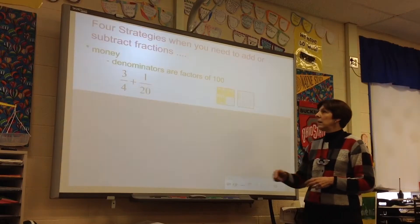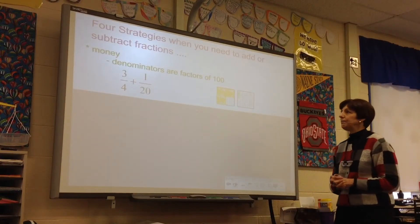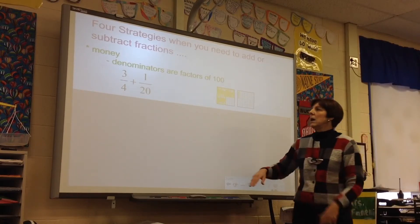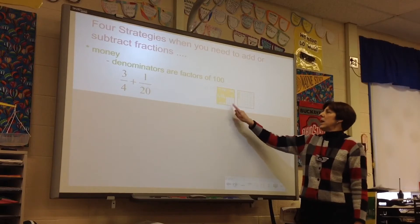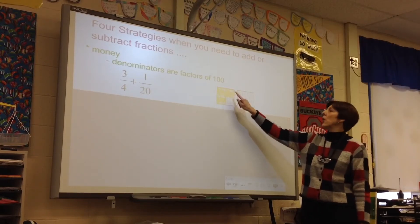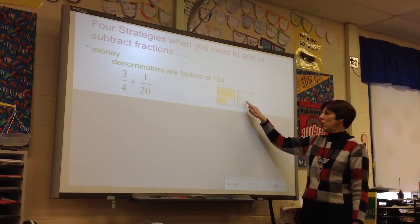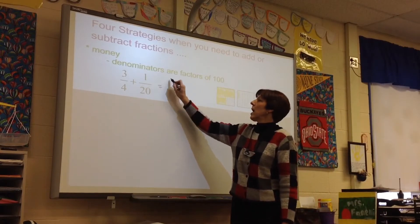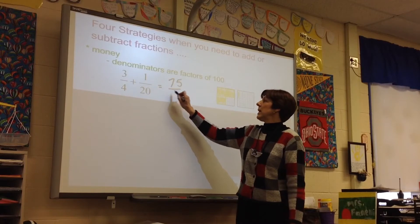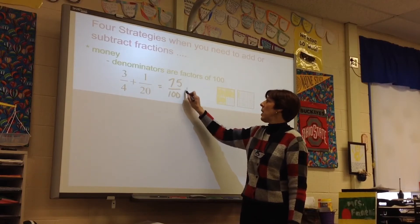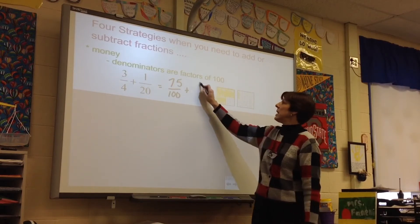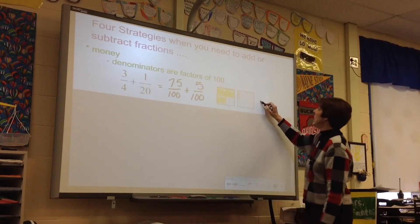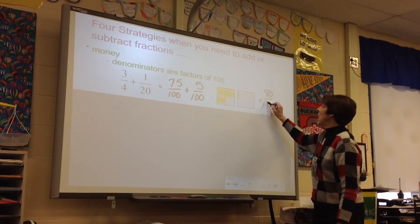First, let's look at the money strategy. When denominators are factors of 100, 3 fourths plus 1 twentieth. Here are models to show 3 fourths shaded in, 1 twentieth. The children have learned that 3 fourths is 75 hundredths, 1 twentieth is 5 hundredths. So our total is 80 hundredths.